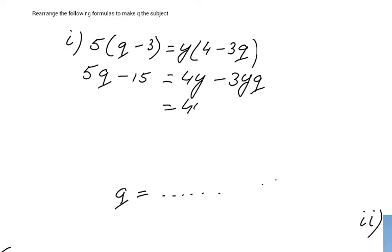So I am going to have 4Y plus 15 equals 5Q plus 3YQ. So I have 2 terms with a Q in it and I have 2 terms without a Q.